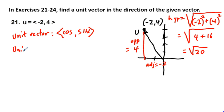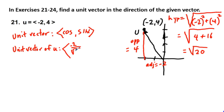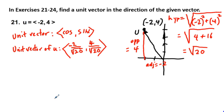So our unit vector of u is written in vector notation. The x-component (adjacent over hypotenuse) is negative 2 over the square root of 20, and the y-component (opposite over hypotenuse) is 4 over the square root of 20. We can test whether this is truly a unit vector by checking that its magnitude equals 1.